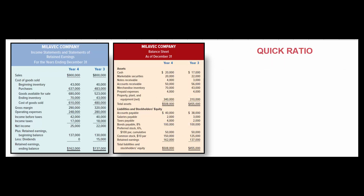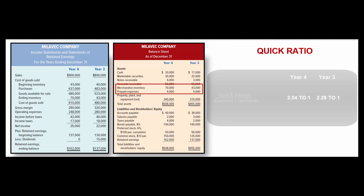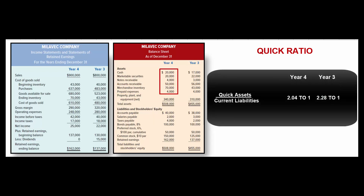One shortcoming of the current ratio is that current assets include items like inventory and prepaid expenses that you can't turn into cash very quickly. So instead we use the quick ratio: current assets minus inventory minus prepaid expenses, all divided by current liabilities. For year four that gives a quick ratio of 2.04 to 1, and for year three it's 2.28 to 1.